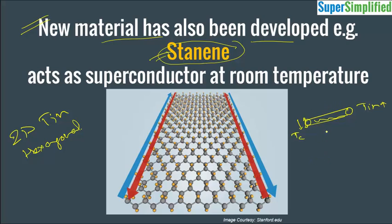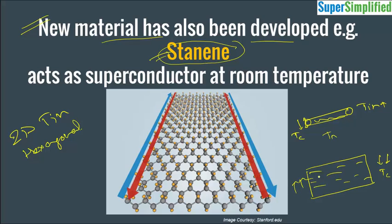But instead of taking a tin wire or rod, if you take a tin sheet and cool it down to critical temperature, it will again start showing superconductivity. And now if you start increasing the temperature, it will start losing the property of superconductivity — but the loss will be only in the interior portion of the sheet. The edges will retain superconductivity even at room temperature. So that is what this diagram is depicting.